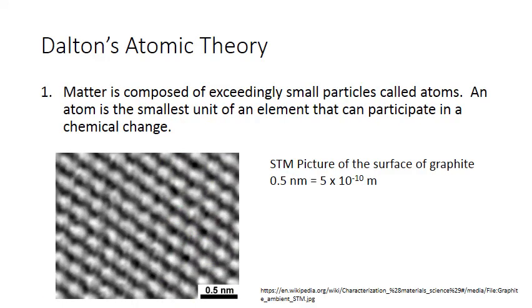The first postulate of Dalton's theory is that matter is composed of exceedingly small particles called atoms. These are the smallest unit of an element that participates in a chemical change. Here's another STM picture, this time of the carbon atoms found in graphite, which is the same substance you'll find in your pencil lead.